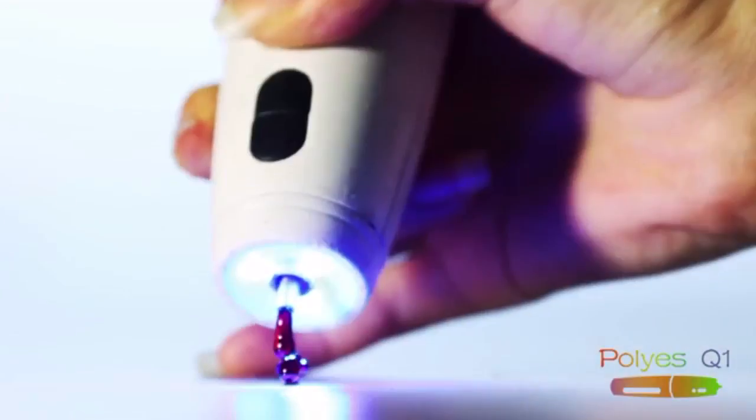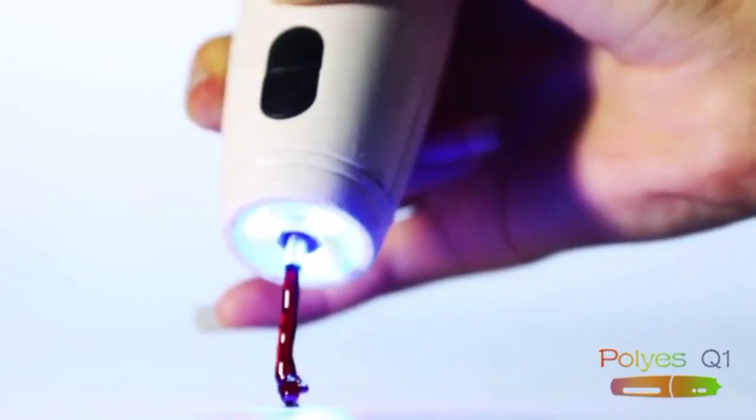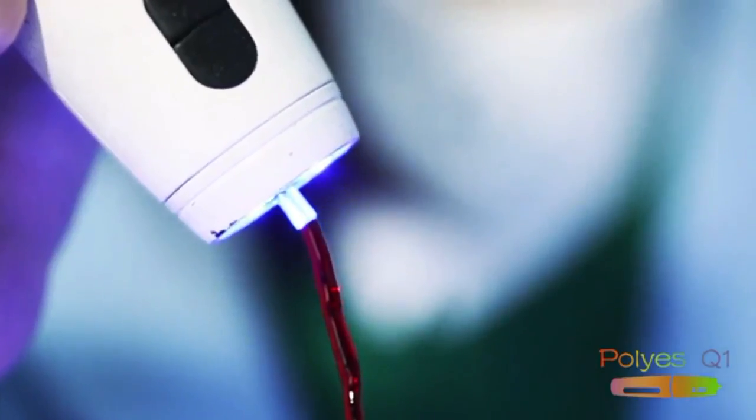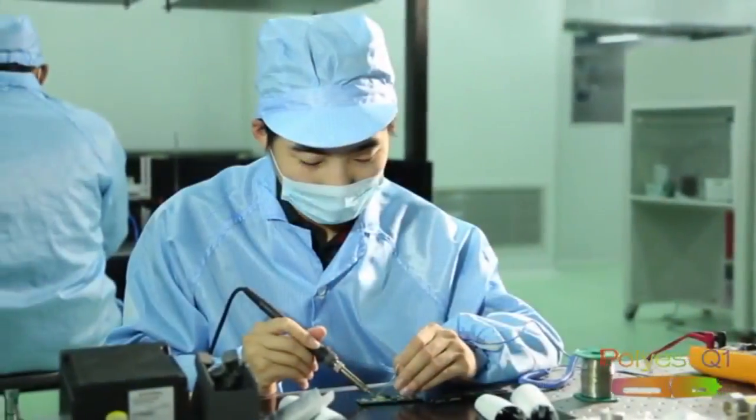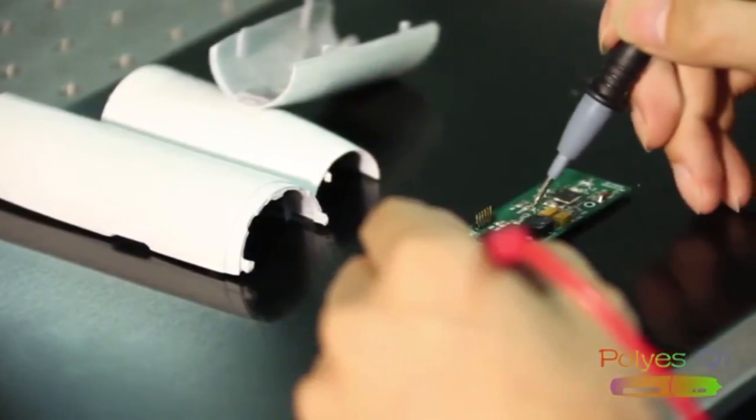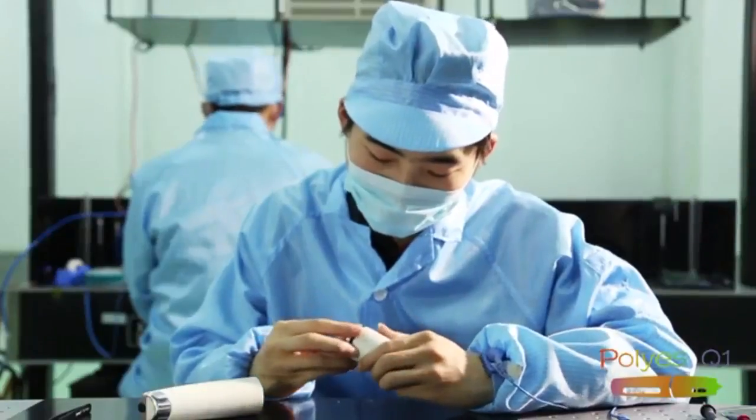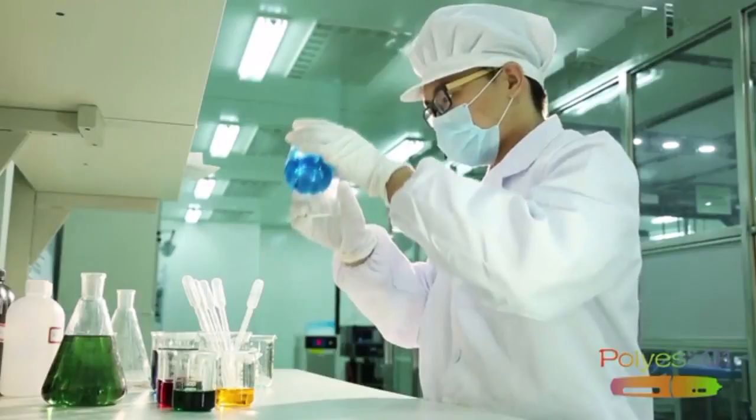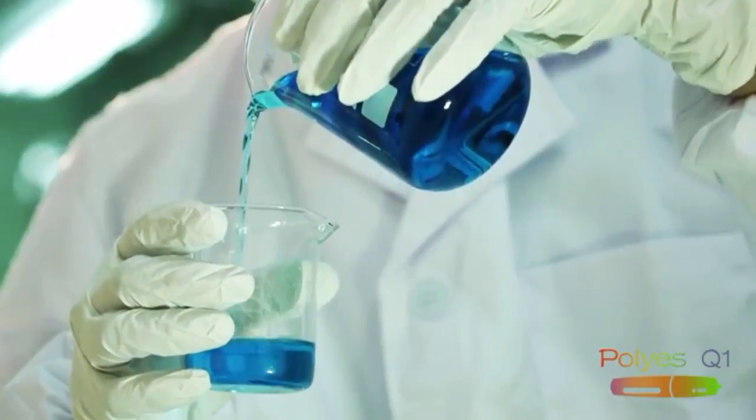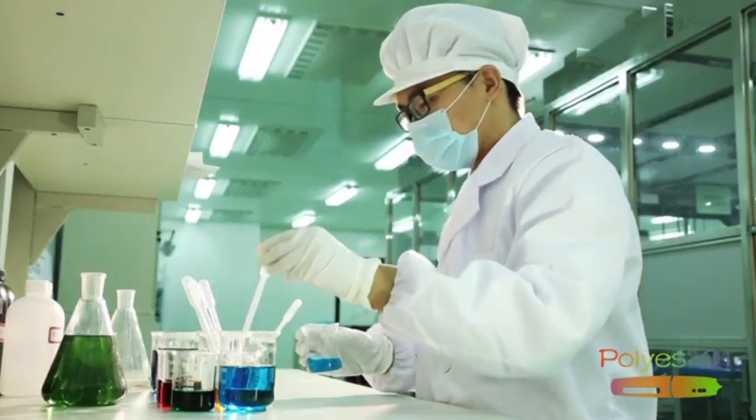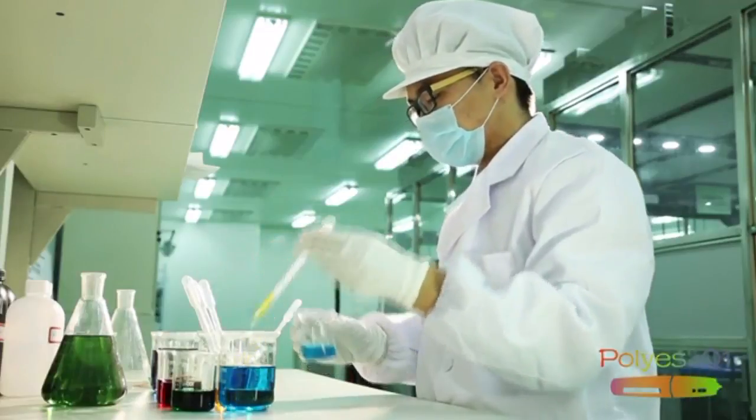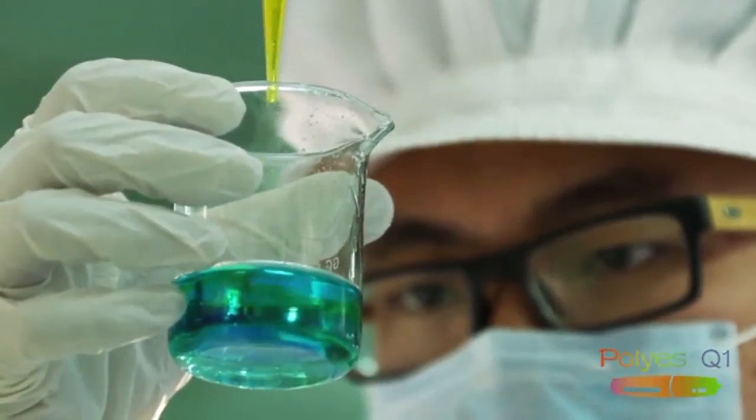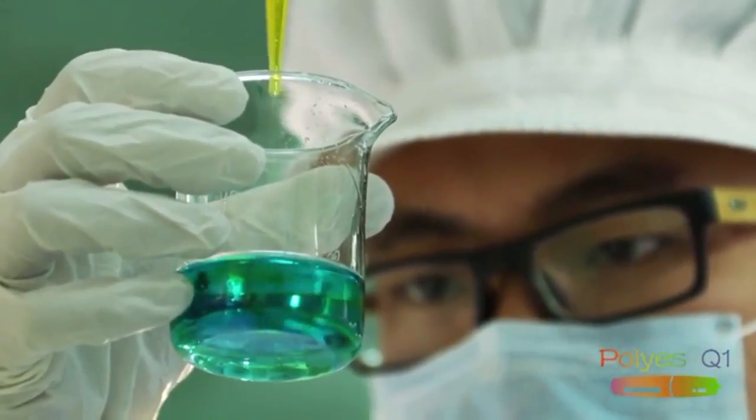Unlike other 3D printing pens on the market, Poly-S utilizes light curing technology. Photosensitive polymers are exposed to ultraviolet light. At the same time, this allows the Poly-S to avoid disadvantages found in other printing pens that use ABS or PLA materials. We have completely eliminated all high-temperature parts so that drawing no longer means having to work with high-temperature, 500 degree Celsius tools. Our goal is to provide users with the safest experience possible.